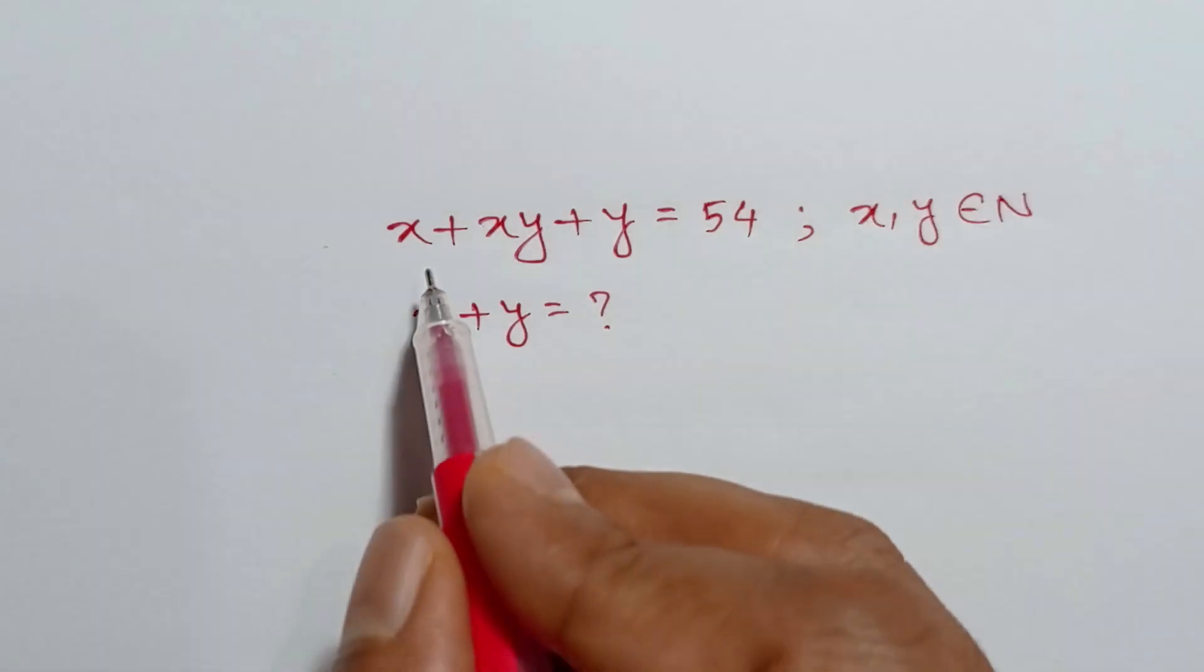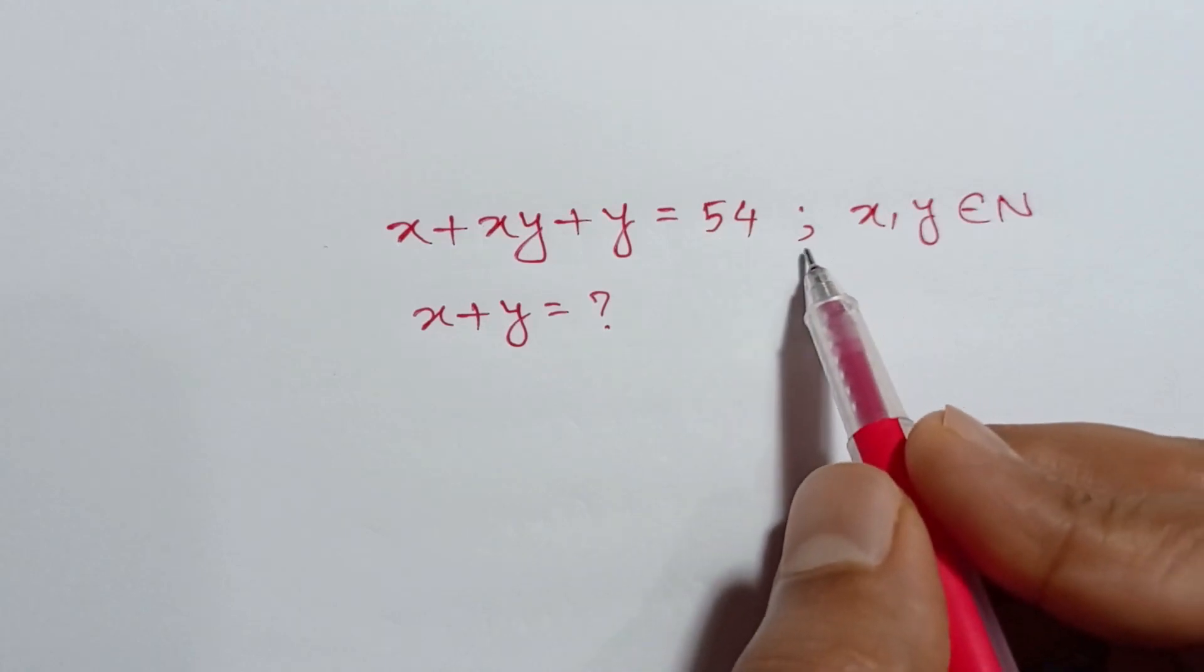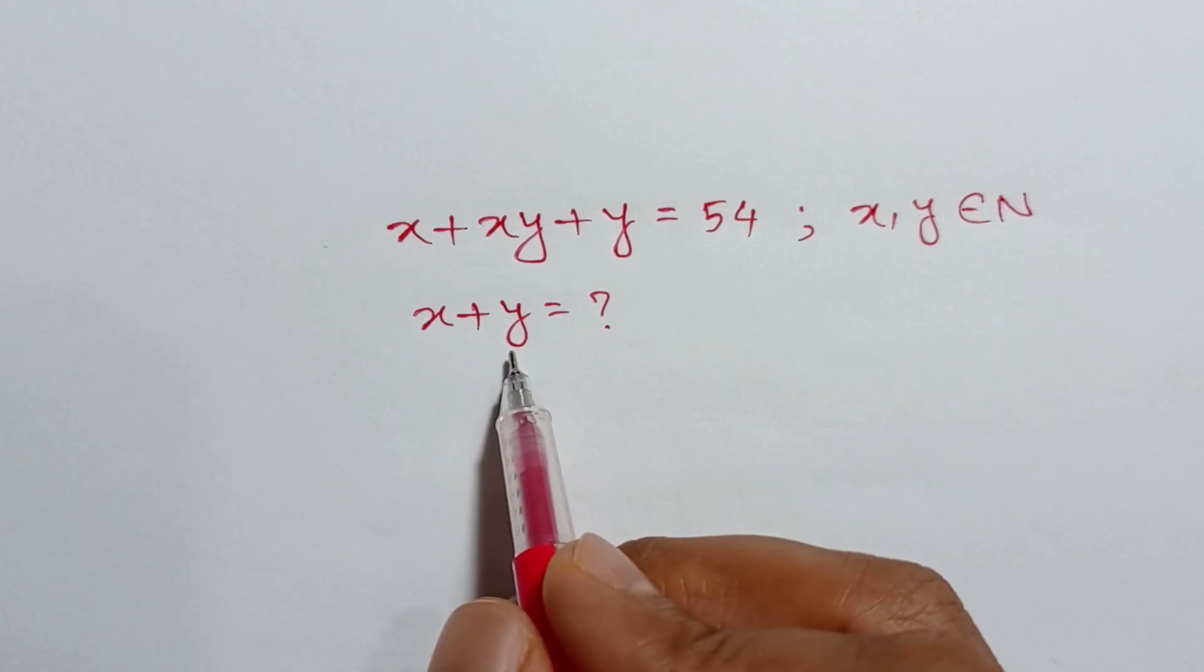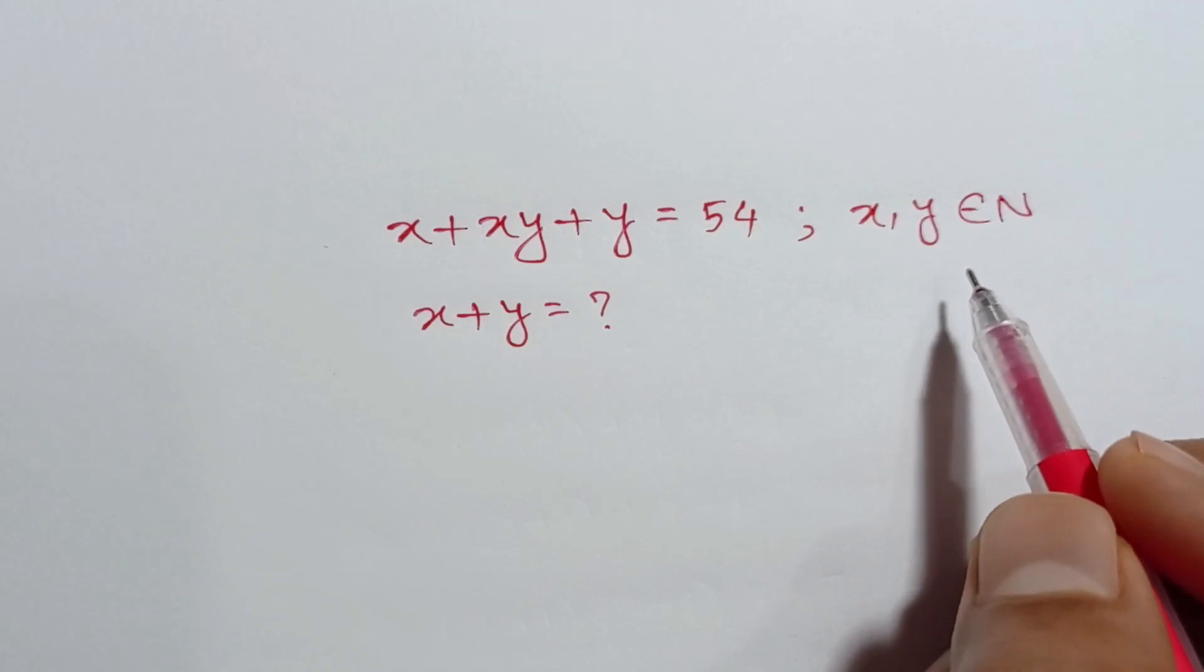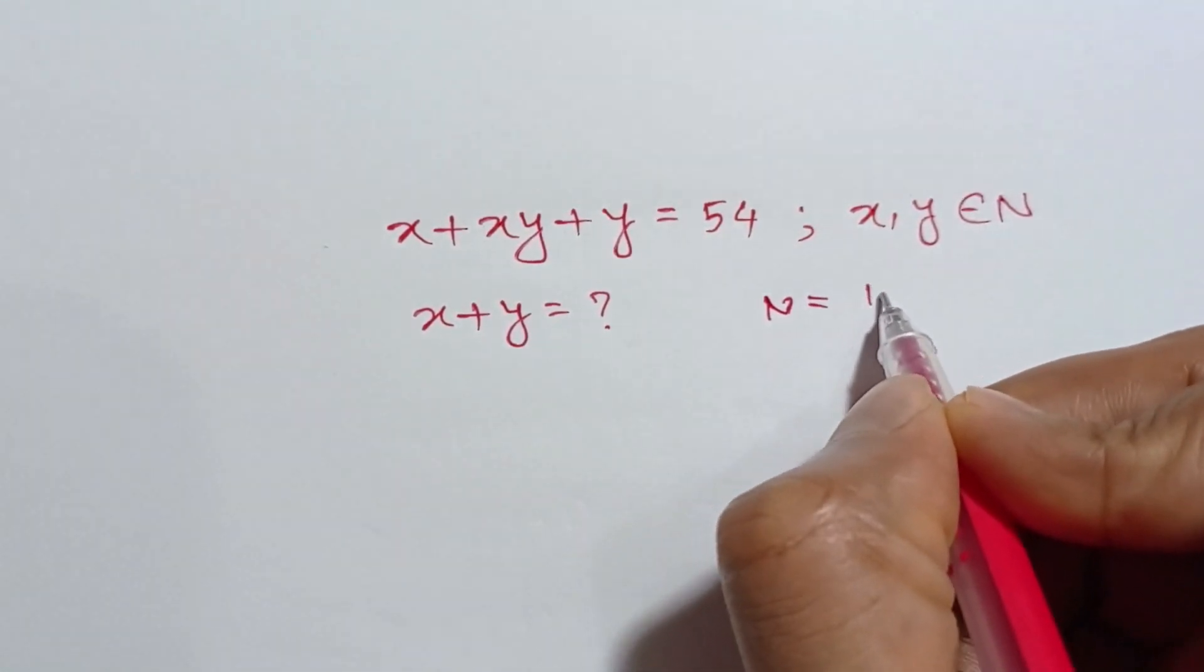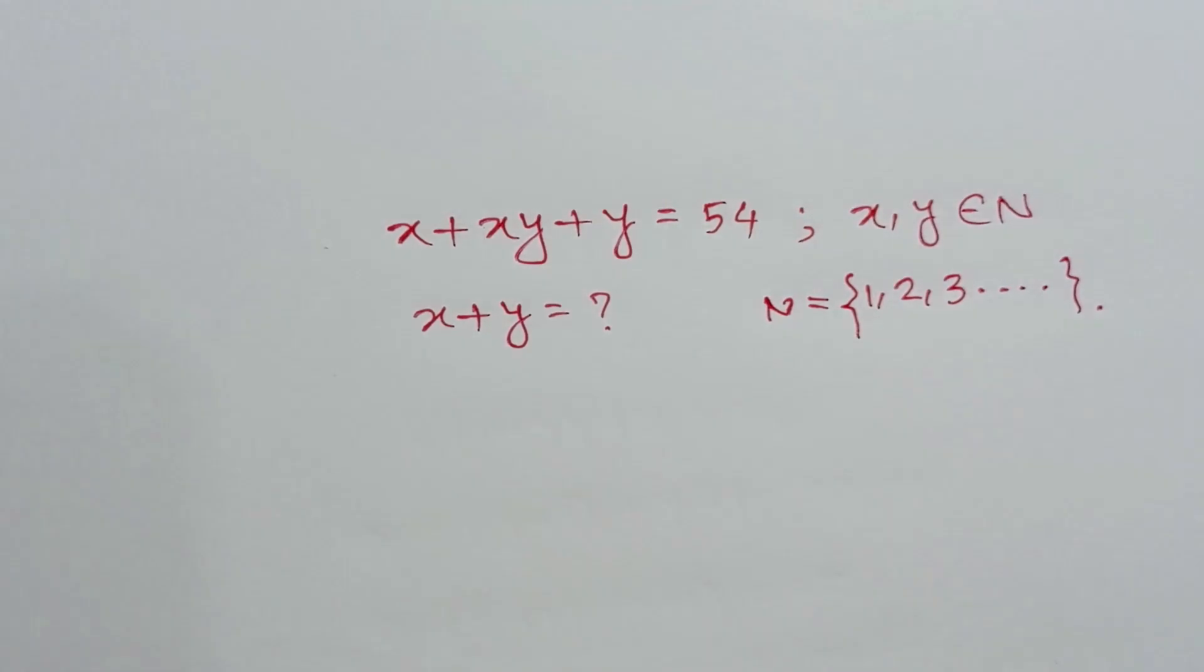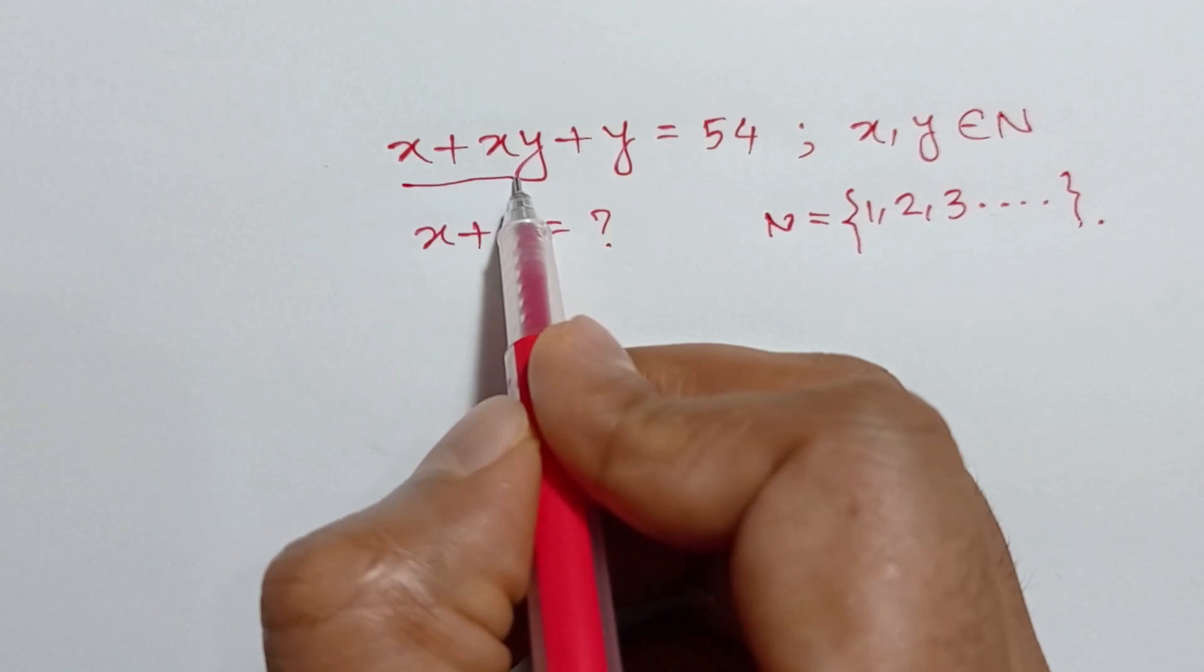Hi everyone, we have given x plus xy plus y is equal to 54, and x, y belongs to N. We have to find the value of x plus y. Here, xy belongs to N means natural number or positive integers. N is equal to 1, 2, 3 up to infinity.